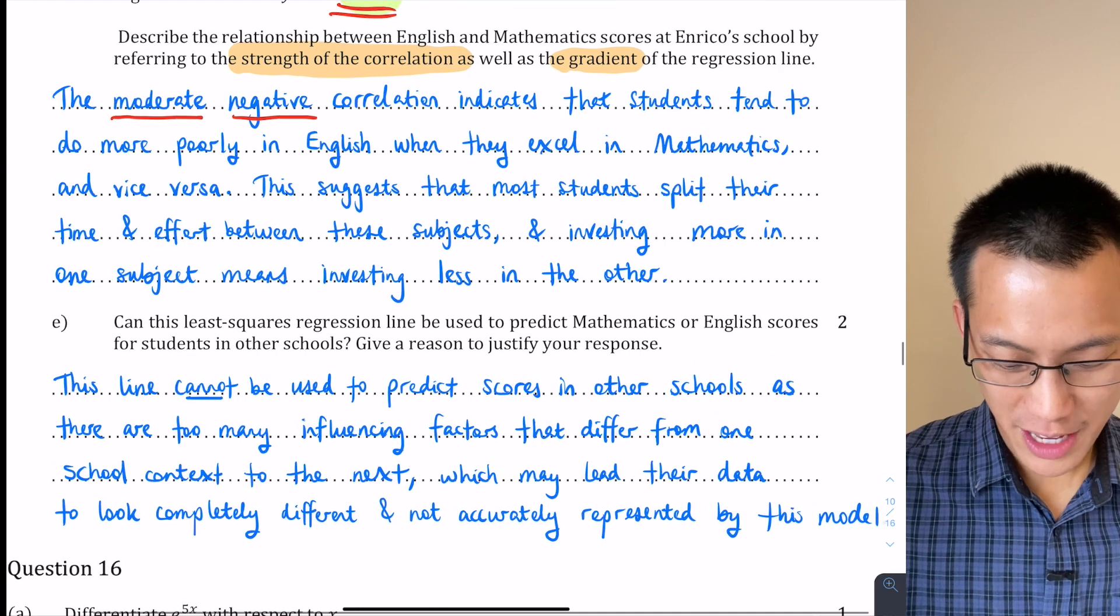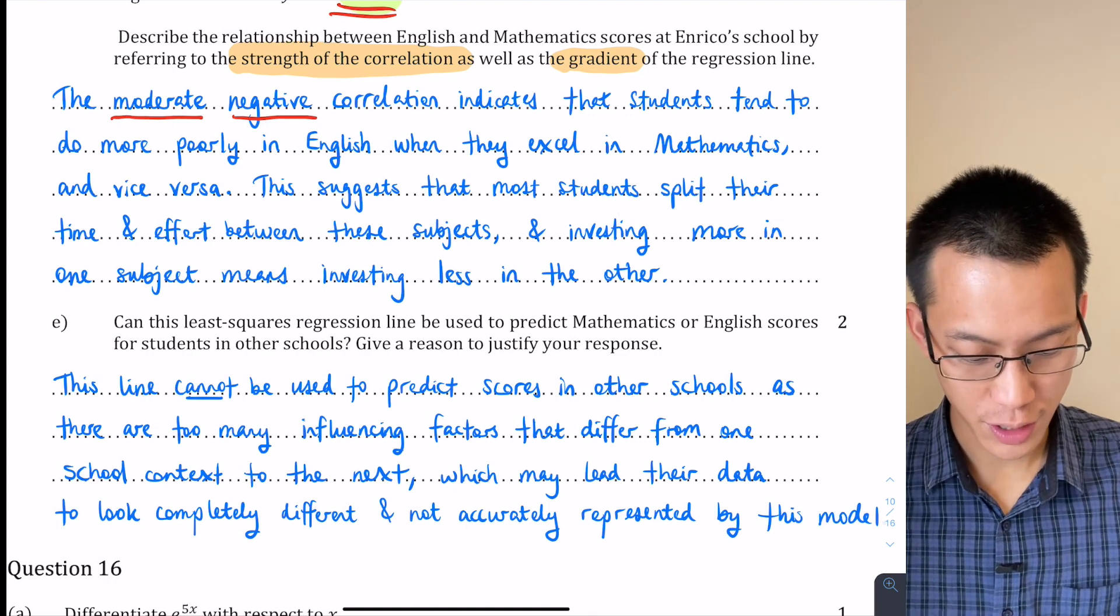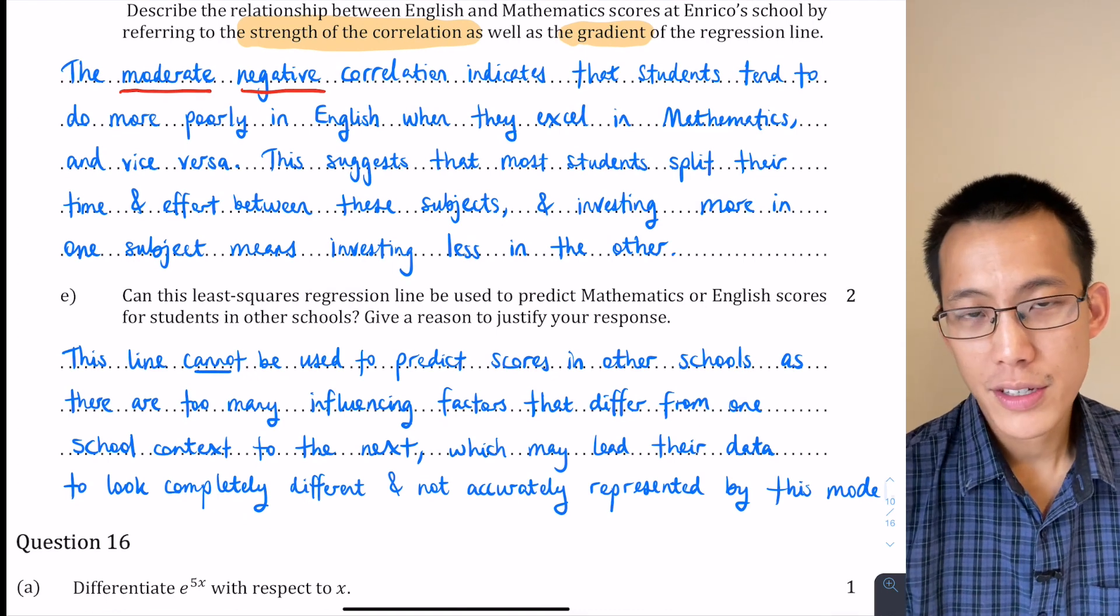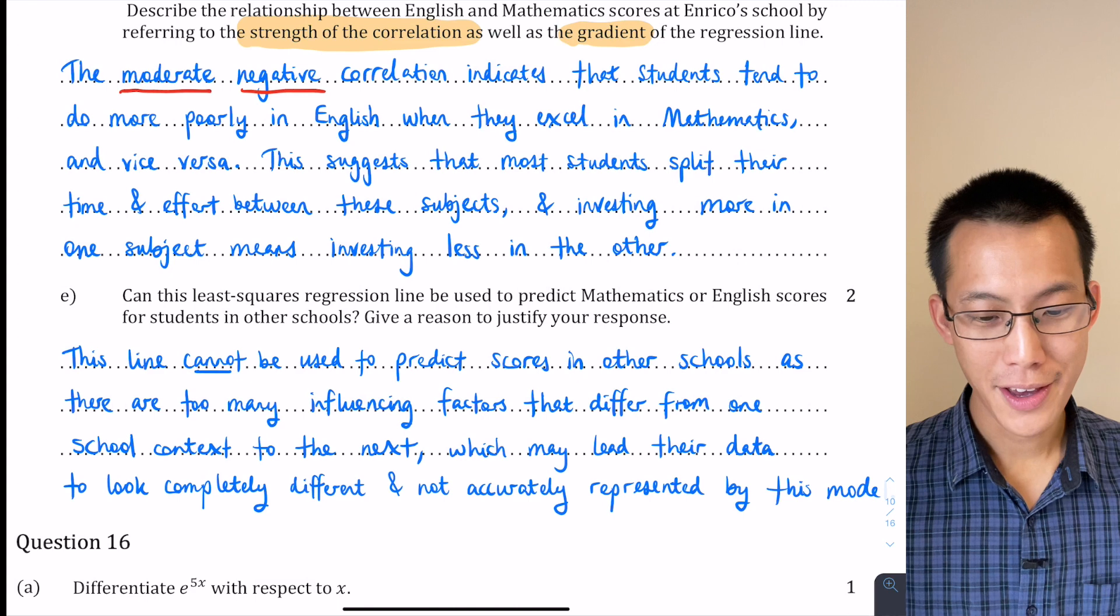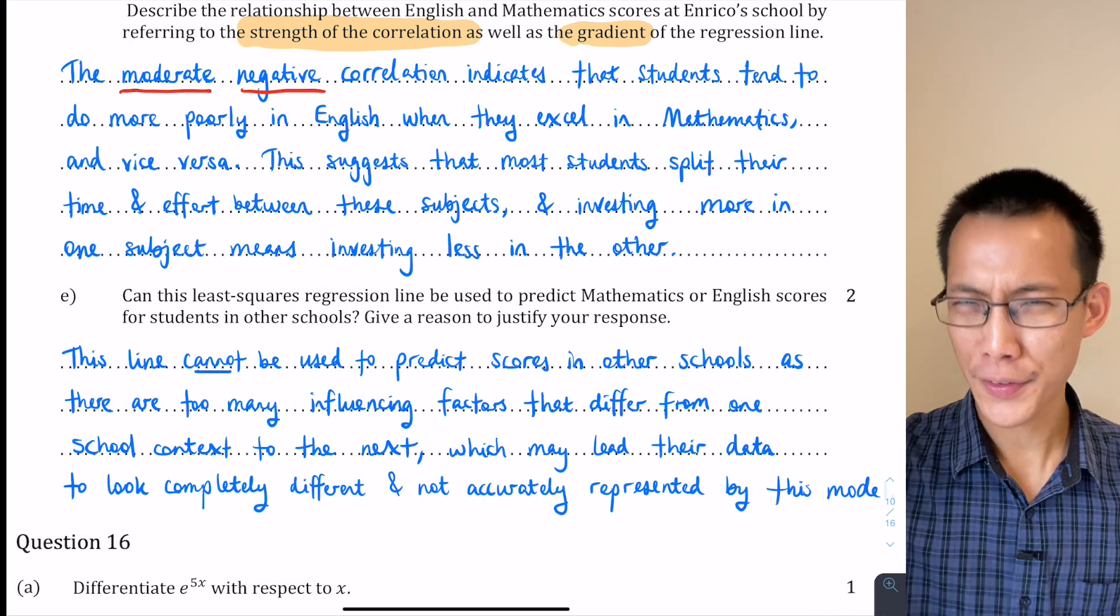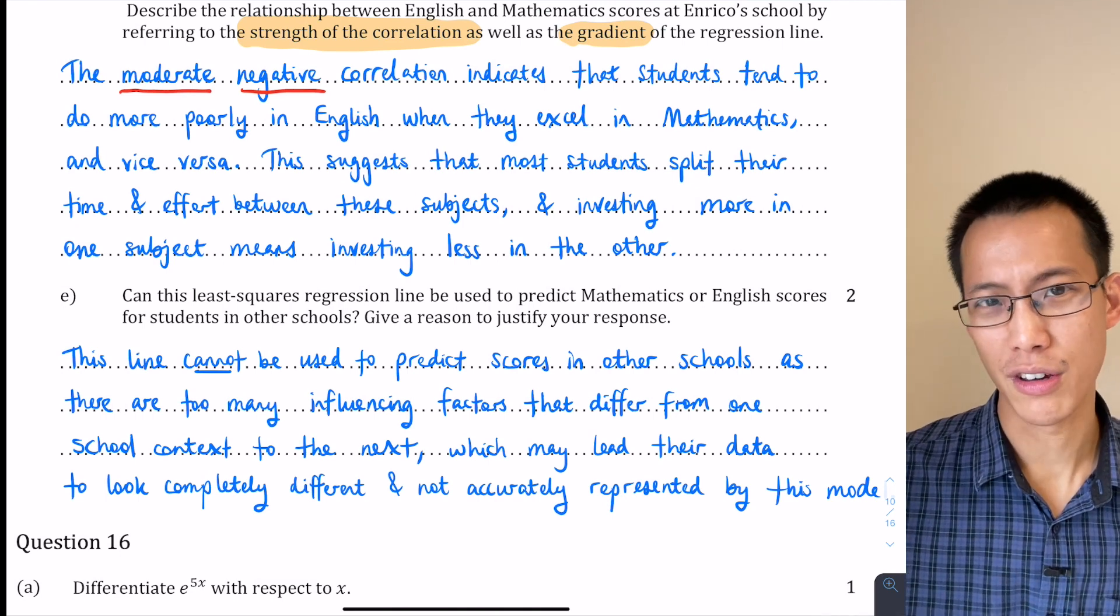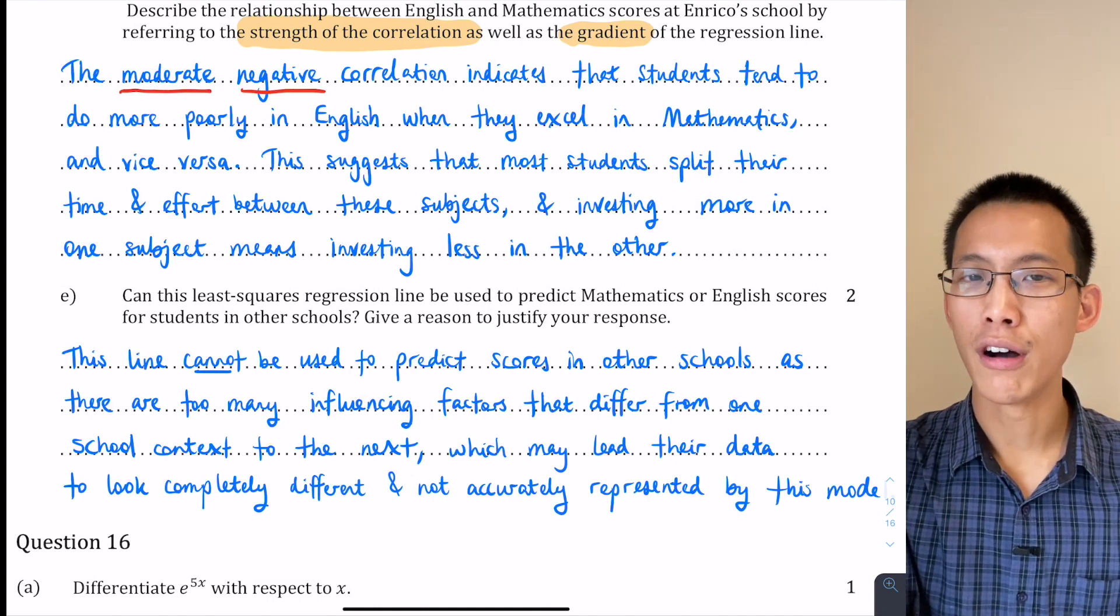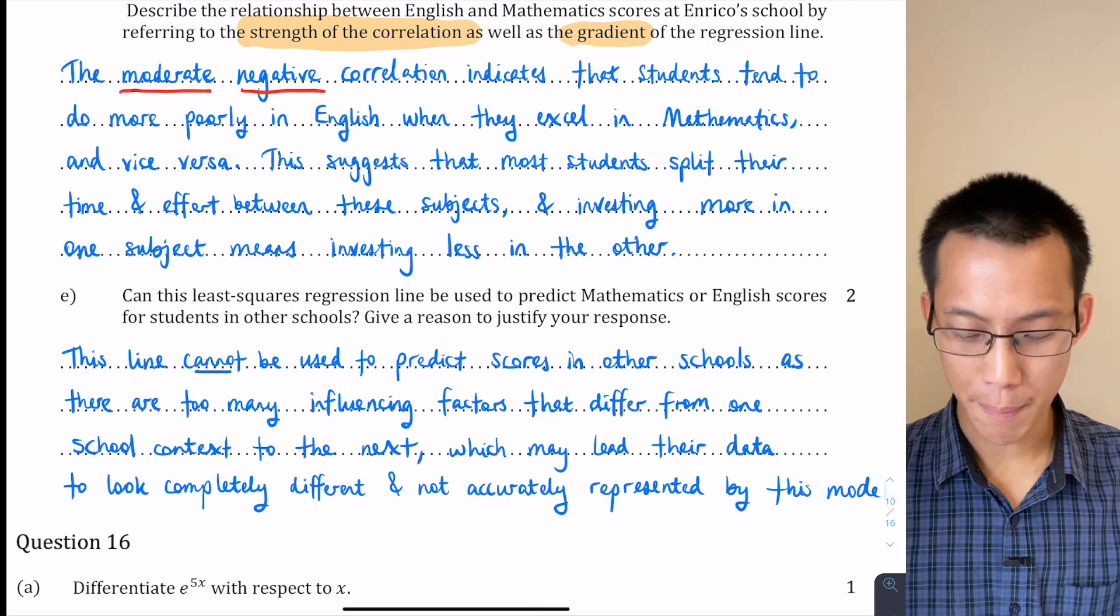Last statistics question for the paper. Can this least squares regression line be used to predict mathematics or English scores for students in other schools? Give a reason to justify your response. So my suggestion is that you can't use these to predict scores in other schools, and that's because there are loads of factors that influence the prediction of scores and they differ from one school to the next. Perhaps one school has an amazing mathematics faculty and all the teachers they're brilliant, and you go to a different school and they're not so great, and that's obviously going to have a huge impact on the performance of students in mathematics assessment tasks. So because those two factors have changed completely, you wouldn't expect that you could predict the results of that school on the results of this school, and it's pretty difficult to argue an opposite case here because there are just so many factors in the opposite direction.